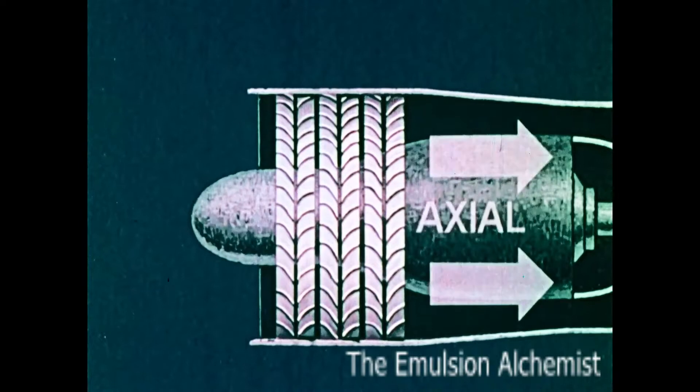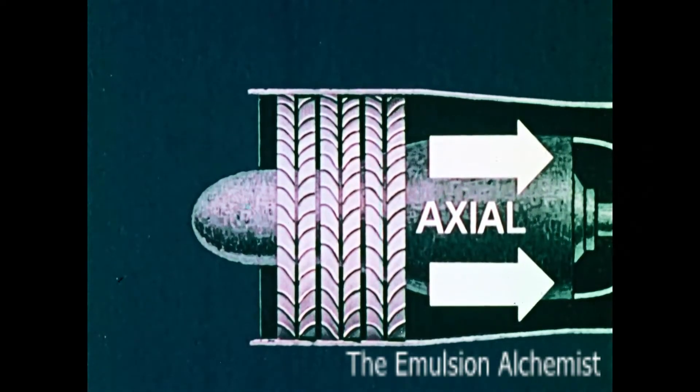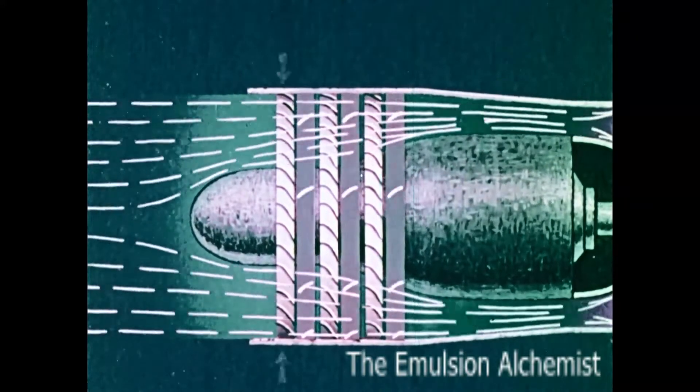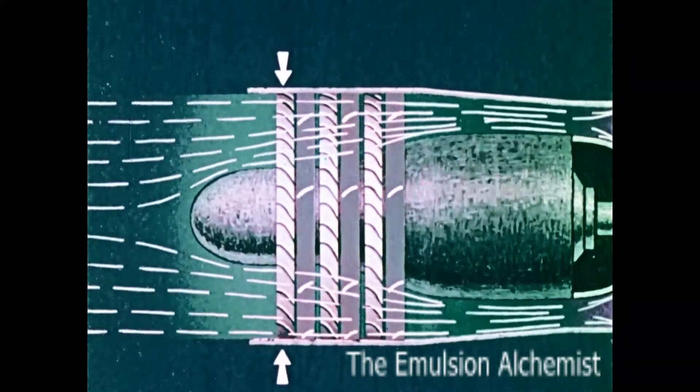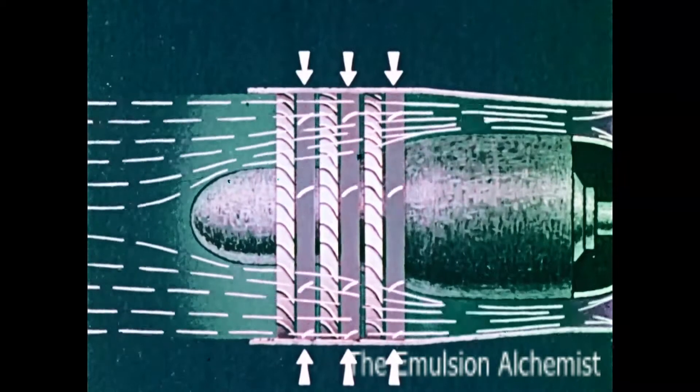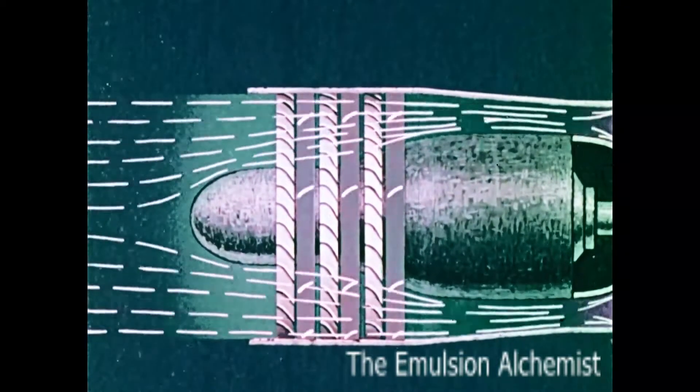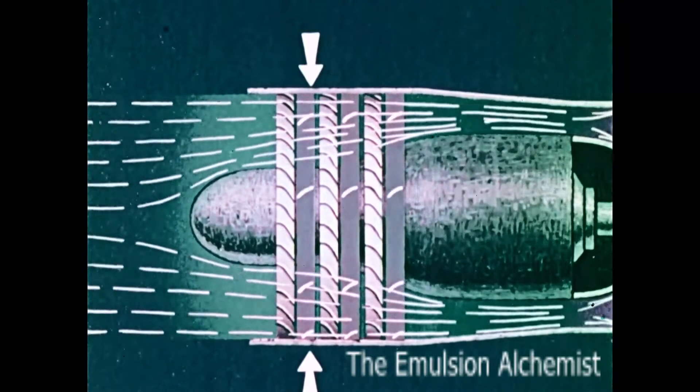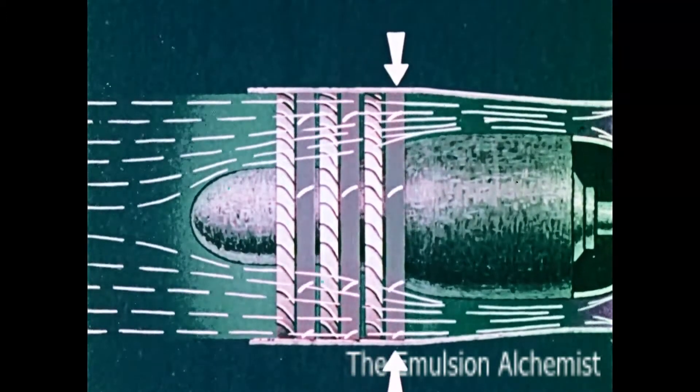Some engines use an axial flow compressor. The air is drawn in parallel to the axis of the shaft, usually through stationary guide vanes to blades on a rotating wheel. The rotating blades, like those on an ordinary fan, accelerate the air, adding energy and velocity to it.